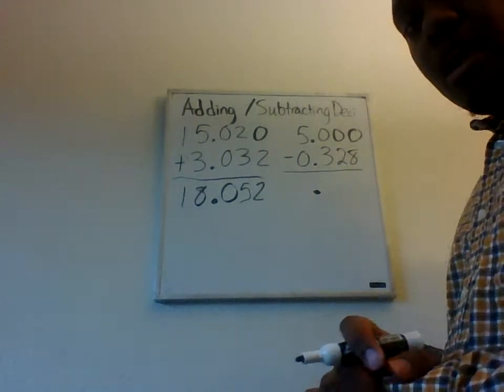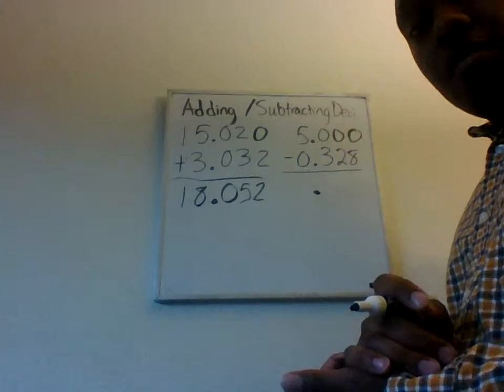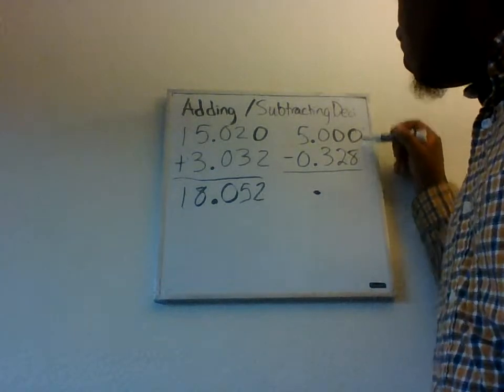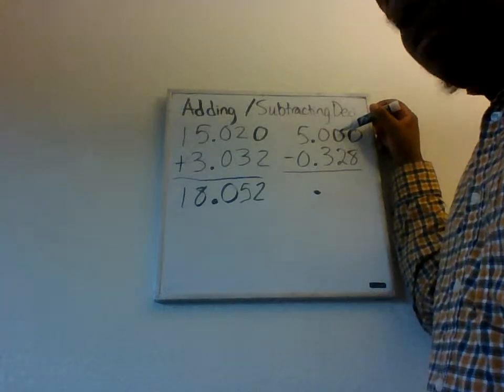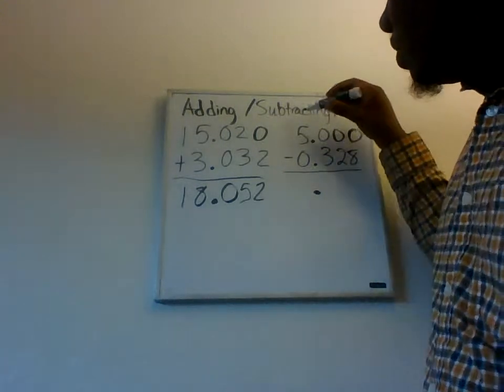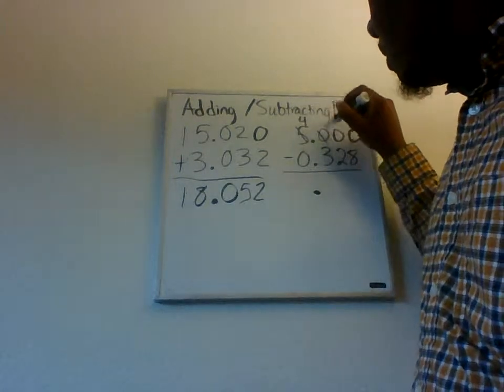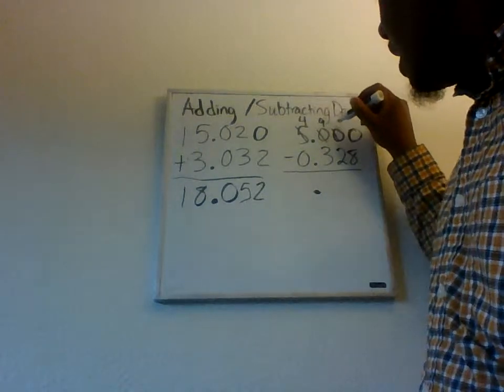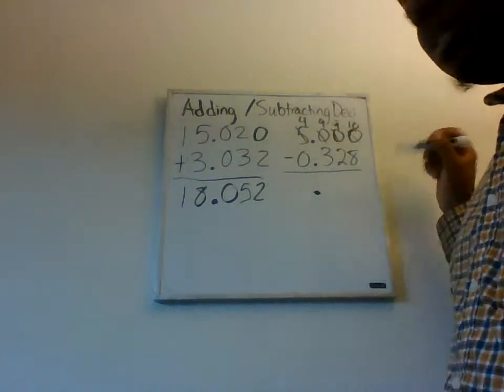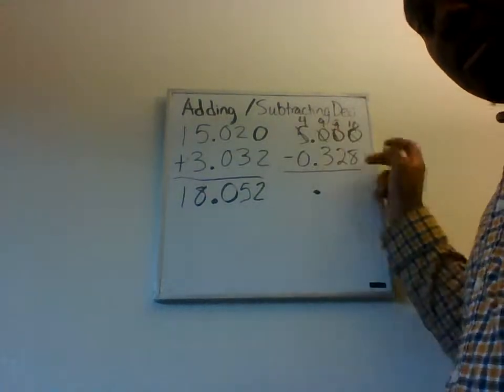Well, remember when we subtracted, we borrowed until we got to where we needed. So, in this case, 0 minus 8 we can't do, so we go to the next level, which we still won't be able to do. Go to the next level, we still won't be able to do. Go to the 5, we can make this become a 4. We can make this become a 9. We can make that become a 9. And we can make that become a 10. So, I just went all the way across to borrow and brought it back.